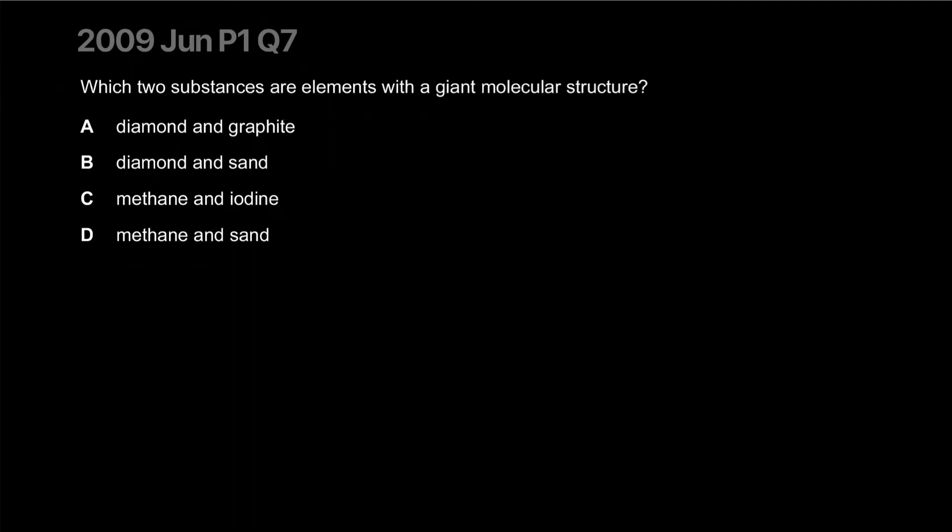Which two substances are elements with a giant molecular structure? Diamond and graphite - there we go. Carbon allotropes. Diamond is a giant covalent structure and graphite is also a giant covalent structure, so we already have our answer. Then you have diamond and sand - the question is asking for elements, right? So sand is a compound, that's out.